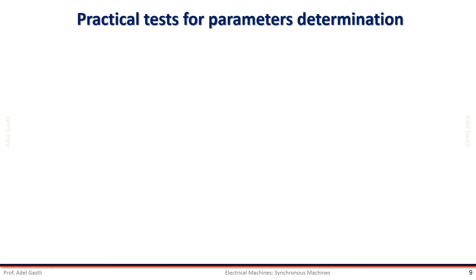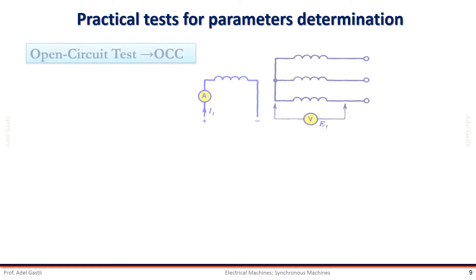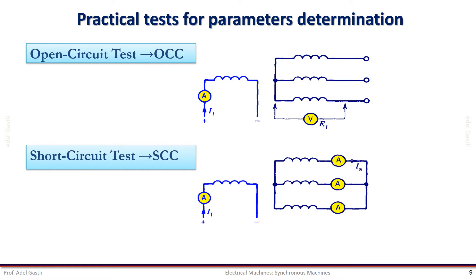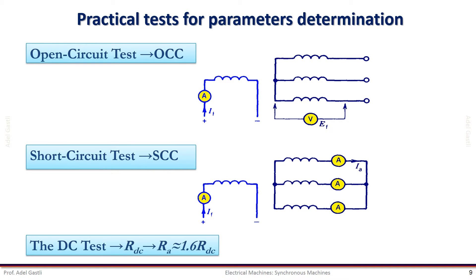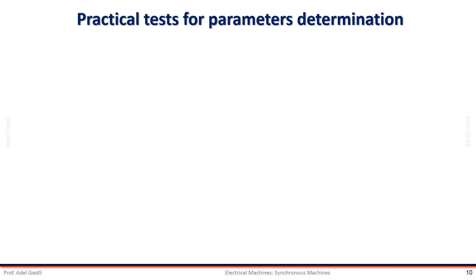To determine the equivalent circuit parameters, we need to conduct three tests: the open circuit test, the short circuit test, and the DC test. In the DC test, the DC resistance of the armature is measured. However, the effective resistance accounting for the skin effect and temperature must be deduced from the measured DC value by multiplying with a correction factor. This factor could be taken around 1.6. Let's see how the open circuit and short circuit tests are conducted and used for finding the other equivalent circuit parameters.